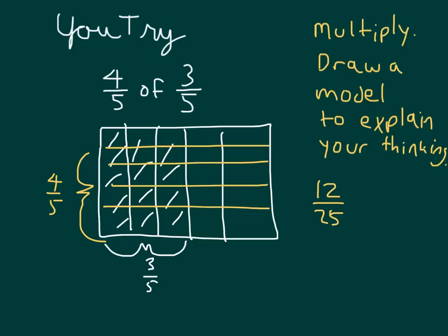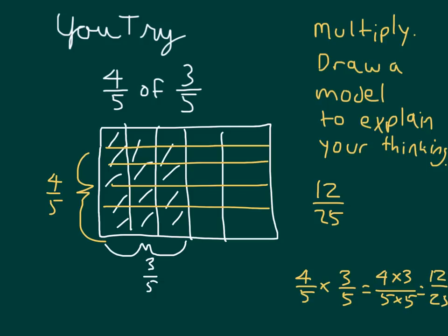Also, write out an equation if you did not do so already, just so that you are making sure you're looking over your work, checking it, and solving it in multiple ways to understand the process. Four times three is twelve, and five times five is twenty-five. So the whole equation is four-fifths times three-fifths equals twelve-twenty-fifths. Four-fifths of three-fifths does equal twelve-twenty-fifths, shown with a model and also with an equation.